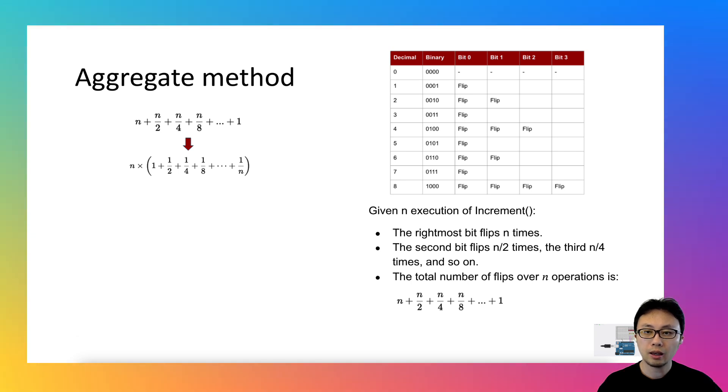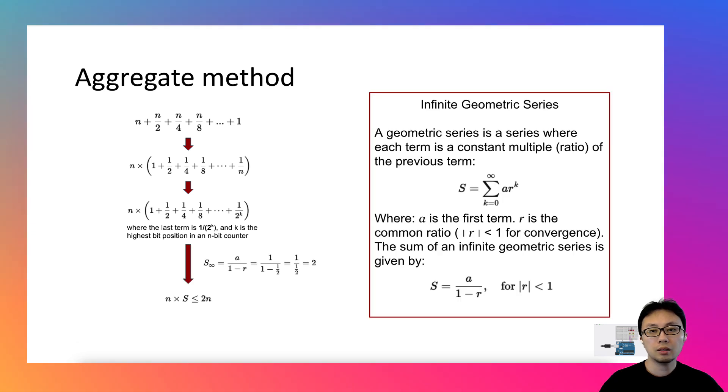k here represents the highest bit position. Based on infinite geometric series, this part in the round bracket can be estimated to a constant number. So the whole summation term can be estimated to a constant number multiplied by n.